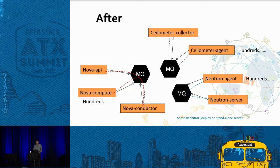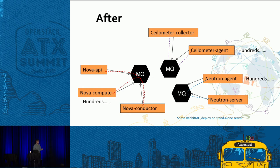In this federated scenario, we collocate services to their respective functionality. Ceilometer services are collocated to the same cluster, and we do the same for Nova and Neutron. Depending on how chatty your systems are, you can collocate Cinder and Glance with one of the other service clusters, or if they're high-demand you can separate them as well.